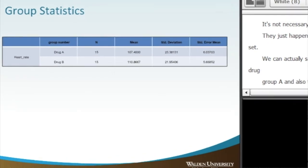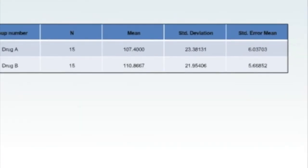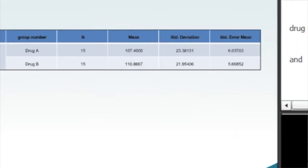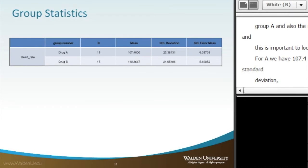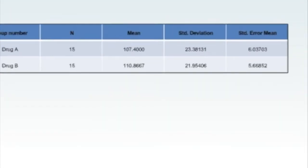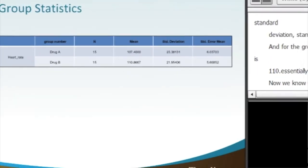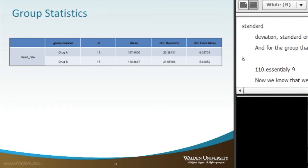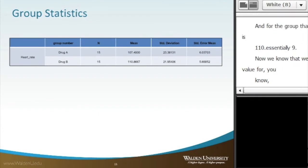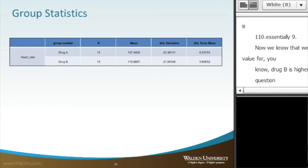And this is important to take a look at as well. So we look for A, we've got 107.4, and then we get our standard deviation and standard error of the mean. And for the group that got drug B, their mean value is 110.9. Now, we know that we can see that the mean value for drug B is higher than that of drug A. But the question is, is there overlap, essentially, of the confidence intervals?